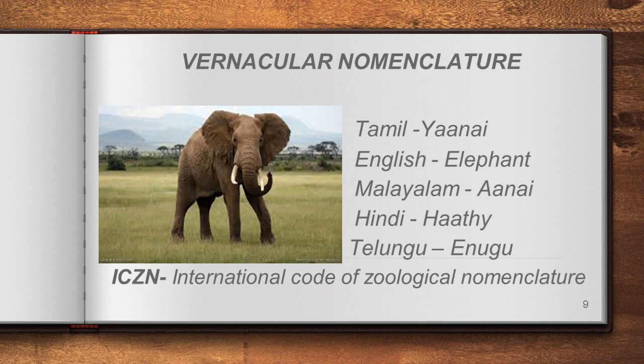The scientific name is common throughout the world so every person can understand the same animal by that name. This naming is done as per the guidelines of the ICZN — the International Code for Zoological Nomenclature. Vernacular nomenclature causes too many drawbacks, which is why scientific names are assigned instead.